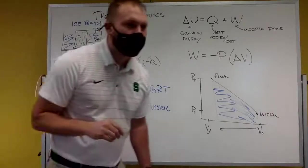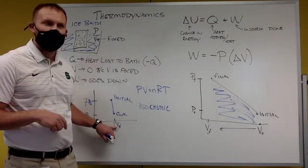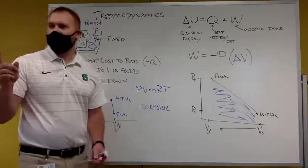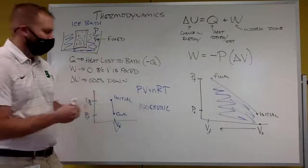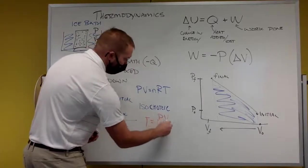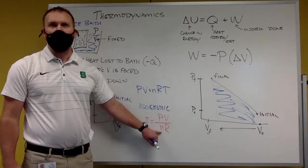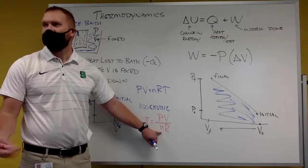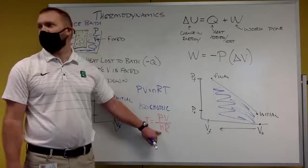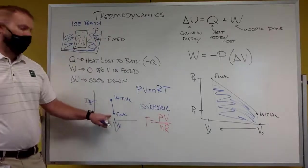Isochoric means the volume doesn't change. Temperature equals PV over NR. N is the number of moles — constant for my system — and R is a constant value. So how can I tell that my temperature went down? P naught times V is going to be greater than P final times V, so temperature is dependent upon pressure times volume.